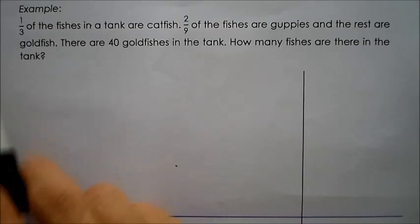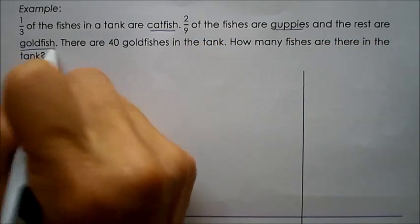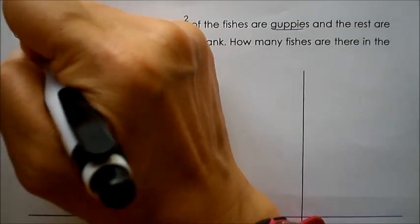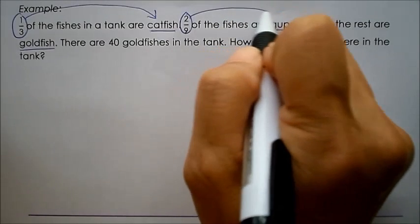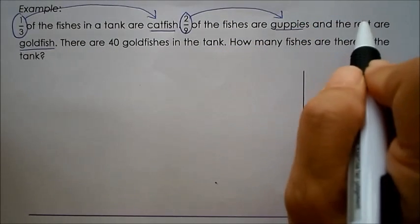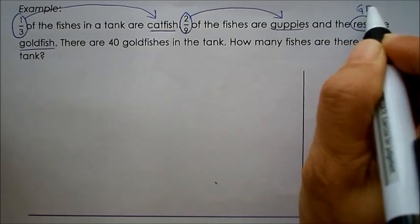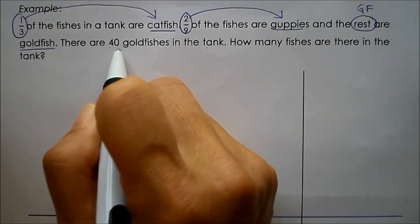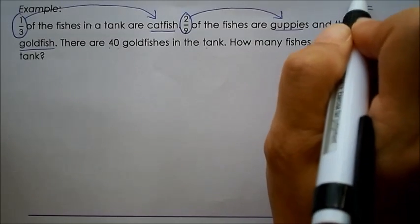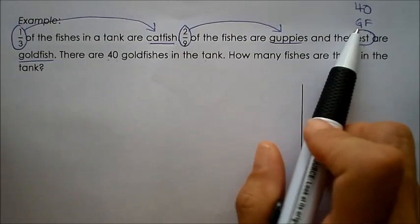Alright, let's understand the question. There are many fishes in the tank — catfish, guppies, and goldfish. One-third of the fishes are catfish, and two-ninth of the fishes are guppies. And therefore, the rest are goldfish. There are 40 goldfishes in the tank, so the rest refers to 40 goldfishes.